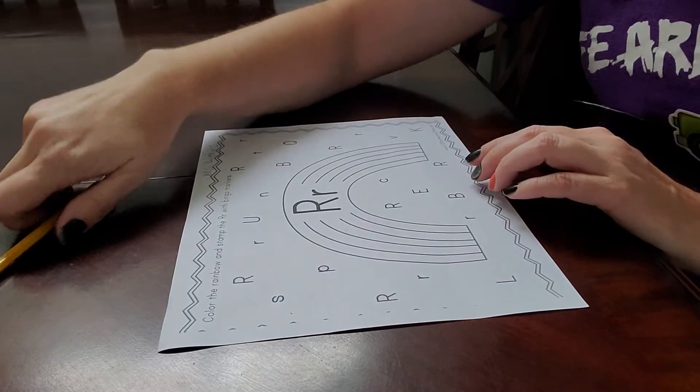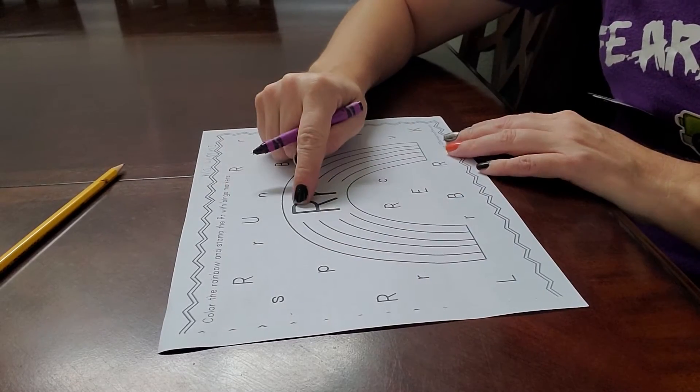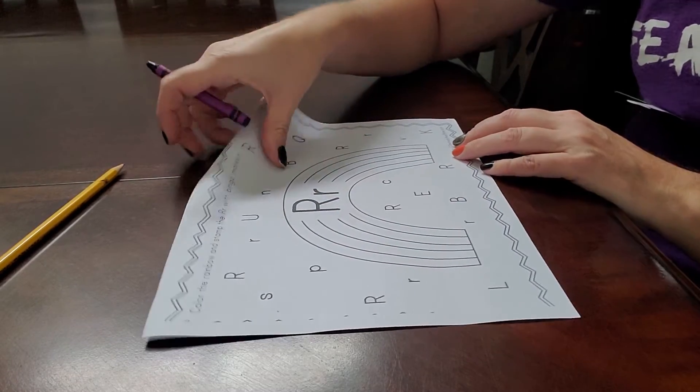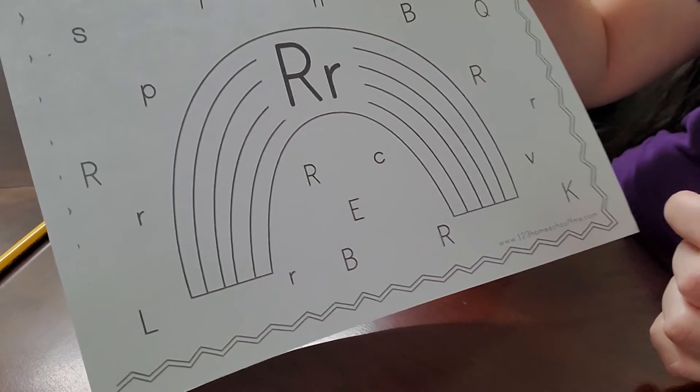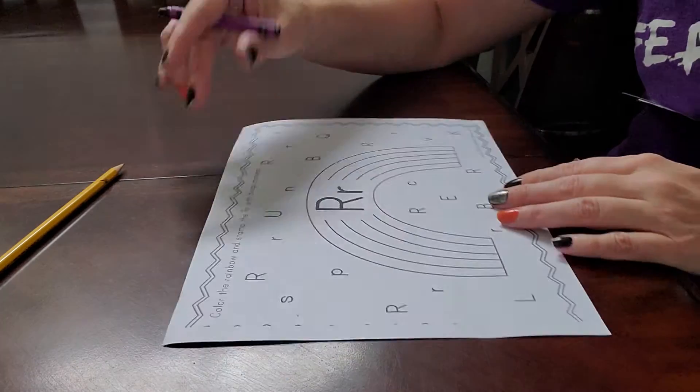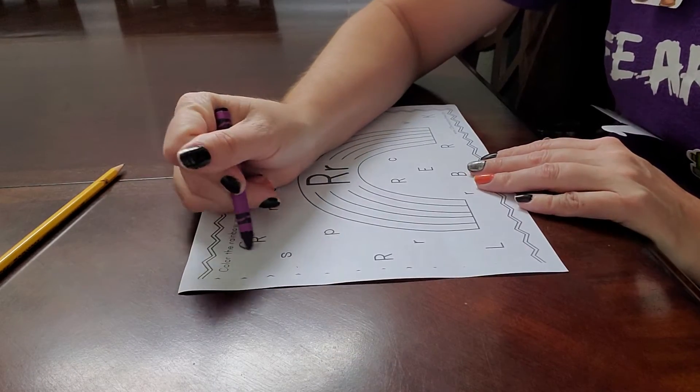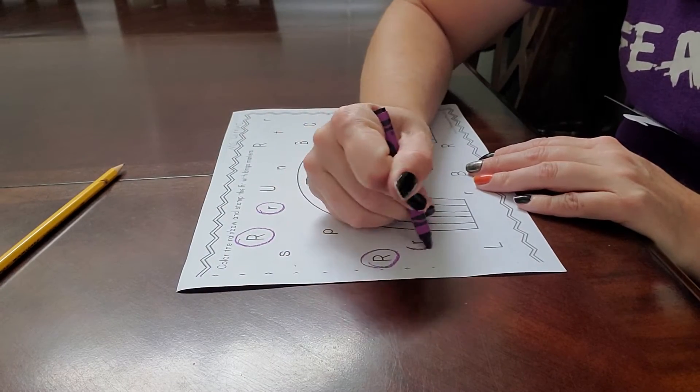And then we are going to use our purple crayon to circle all the uppercase R's and lowercase r's. This is uppercase and lowercase R for Rabbit and Rachel, my first name. So let's go ahead and circle all the uppercase R's and all the lowercase r's.